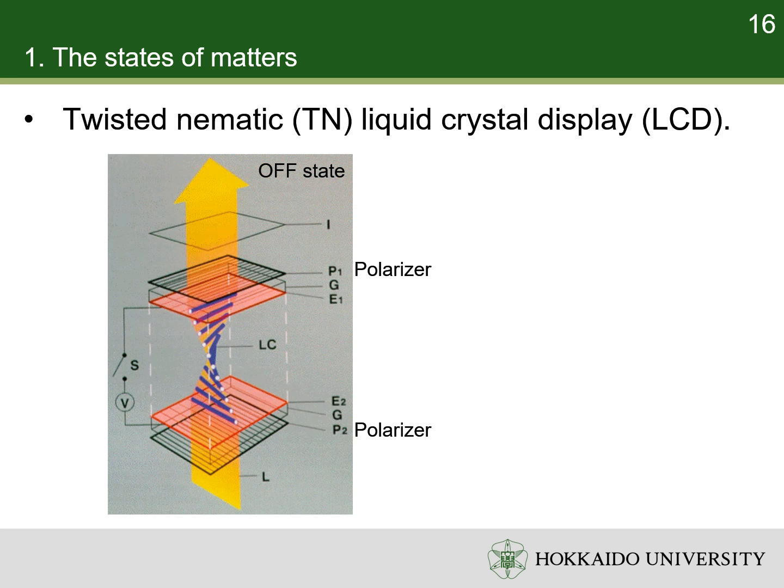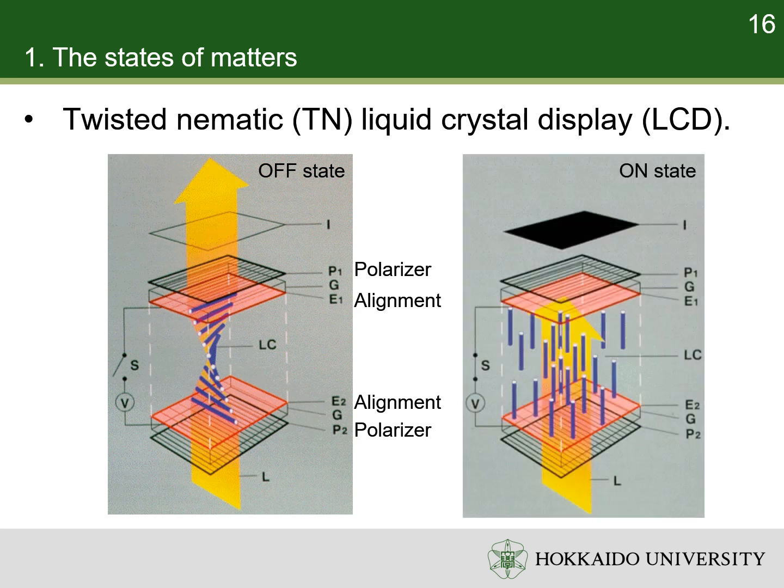In a typical twisted nematic liquid crystal display device, a liquid crystal layer sits between two polarizers that are oriented at 90 degrees to one another. The electrodes are coated with alignment layers that precisely twist the liquid crystal by 90 degrees when no external field is present. This twisted phase reorients light that has passed through the first polarizer, allowing its transmission through the second polarizer, and the device thus appears transparent. When an electric field is applied to the liquid crystal layer, the long molecular axes tend to align parallel to the electric field. In this state, the liquid crystal does not reorient light, so the light polarized at the first polarizer is absorbed at the second polarizer, and the device loses transparency.